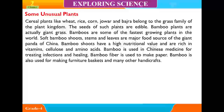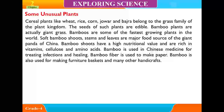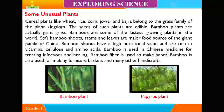Plants of the Grass Family. Cereal plants like wheat, rice, corn, jowar, and bajra belong to the grass family of the plant kingdom. The seeds of such plants are edible. Bamboo plants are actually giant grass. Bamboos are some of the fastest growing plants in the world. Soft bamboo shoots, stems, and leaves are a major food source of the giant panda of China. Bamboo shoots have high nutritional value and are rich in vitamins, cellulose, and amino acids. Bamboo is used in Chinese medicine for treating infections and healing. Bamboo fiber is used to make paper, furniture, baskets, and many other handicrafts.